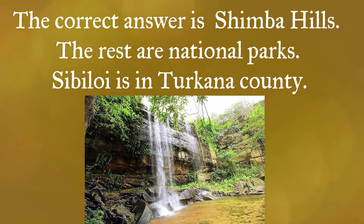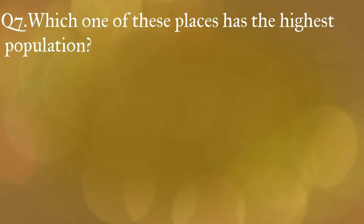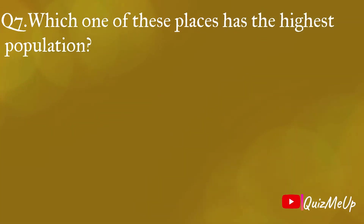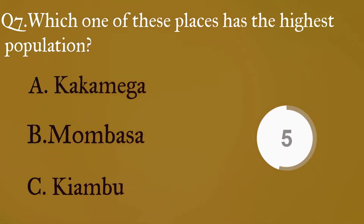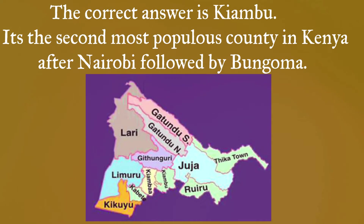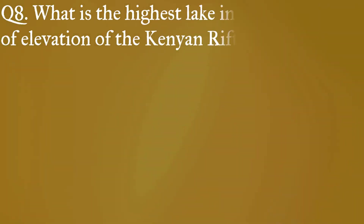Question 7: Which one of these places has the highest population? A: Kakamega, B: Mombasa, C: Kiambu. The correct answer is Kiambu — it's the second most populated county in Kenya after Nairobi, followed by Bungoma.